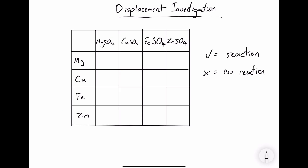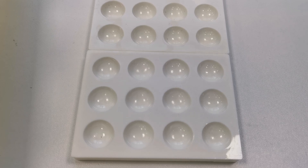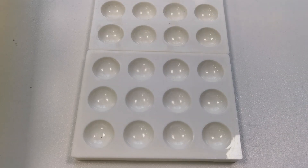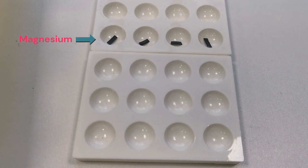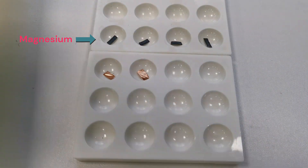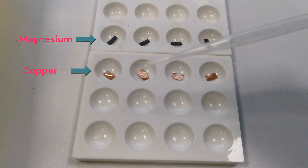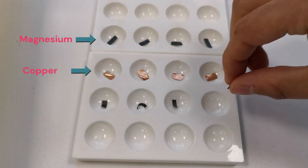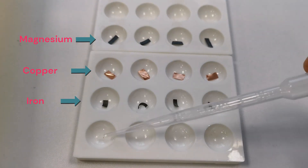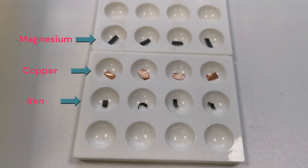Next we're going to investigate displacement reactions — put a tick or a cross in each box to show if there's a chemical reaction taking place or not. Into the first row I'm going to add magnesium metal, into the second row some copper metal, into the third row some iron metal, and into the fourth row some zinc metal.